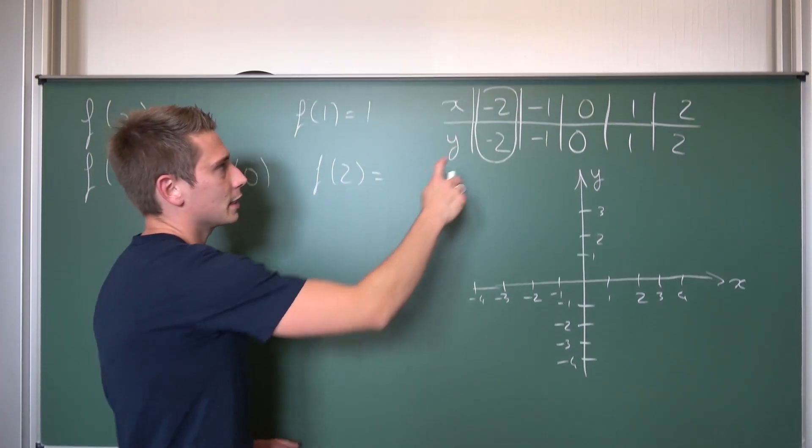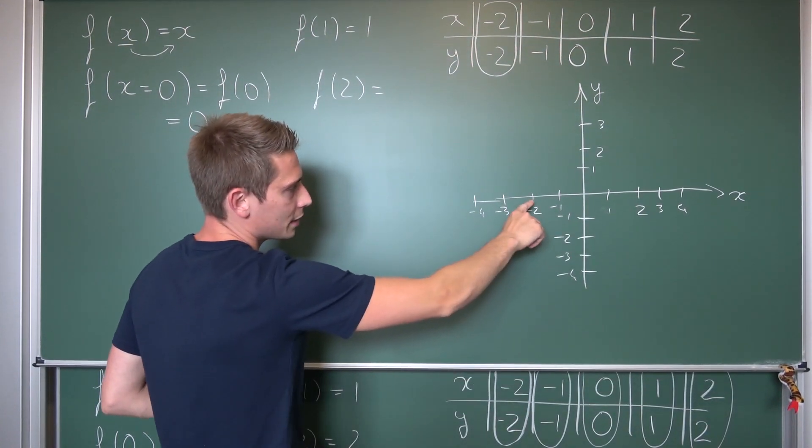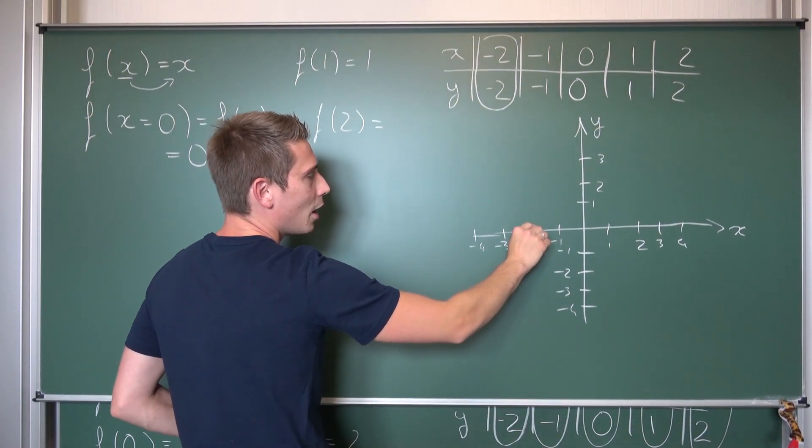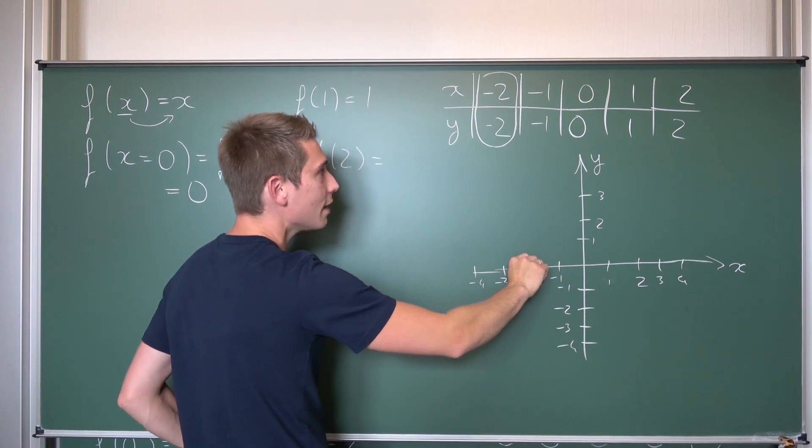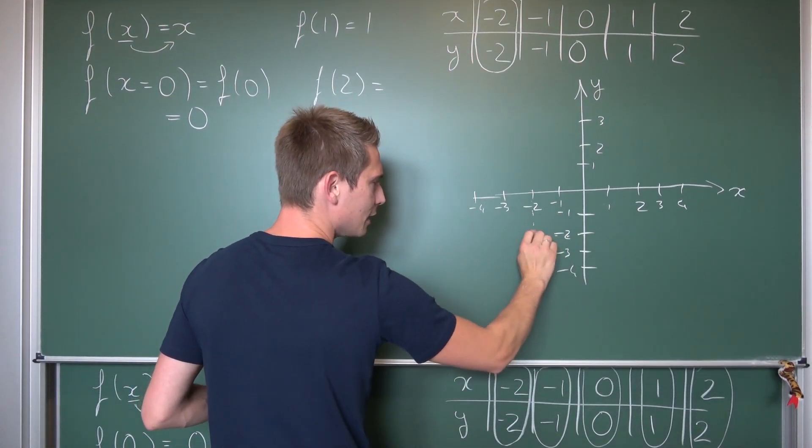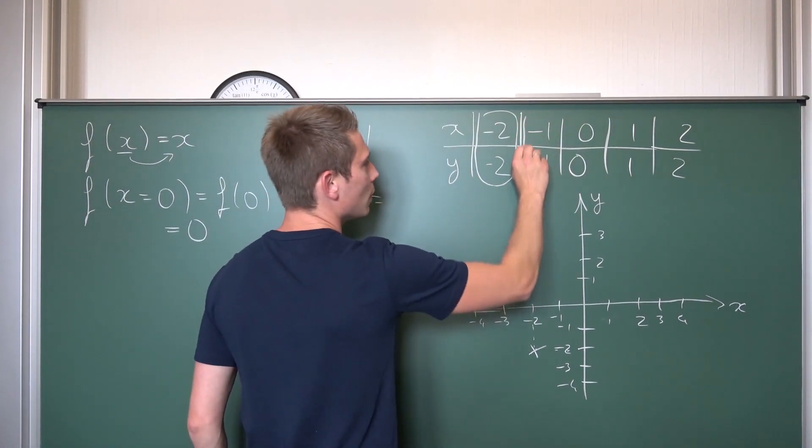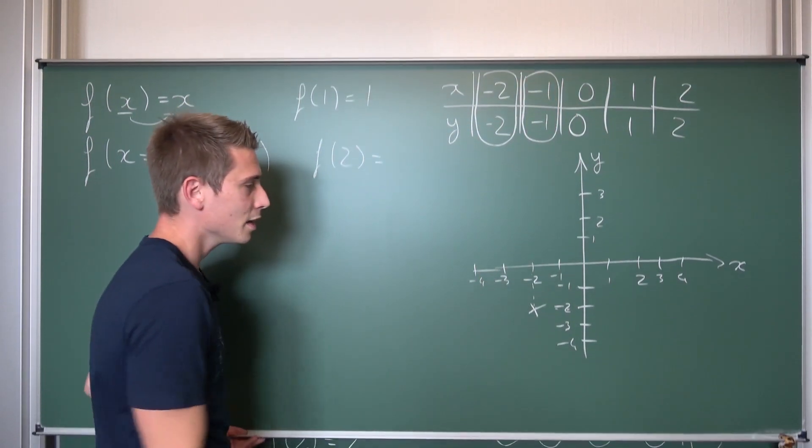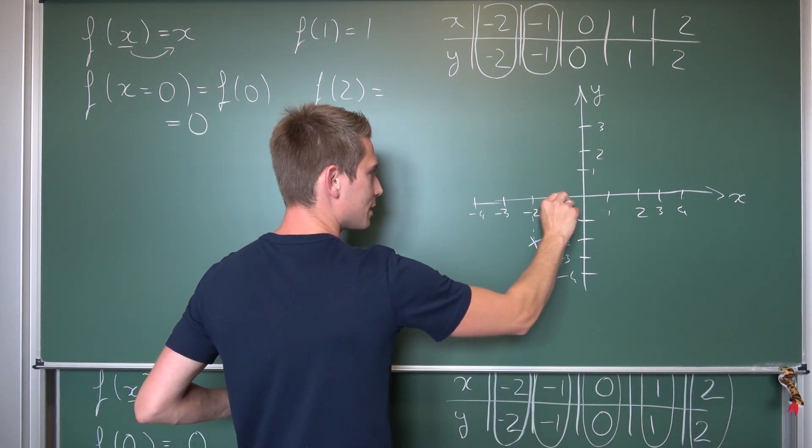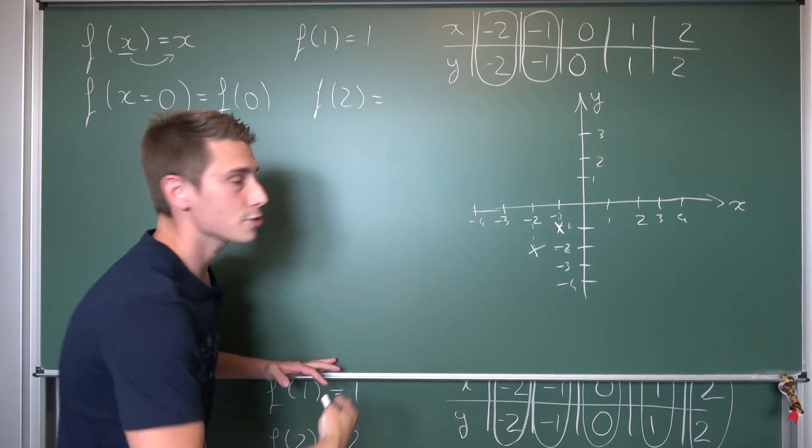At first, our x value was negative 2. Let us see on the x axis where negative 2 is. It's here. And then our x value corresponds to the y value, negative 2. So going down to negative 2. Here's our point that we were seeking. Same should be for negative 1 and negative 1. We are going to look for negative 1. That's here. Go down negative 1 and here's our point. Let's continue this process.